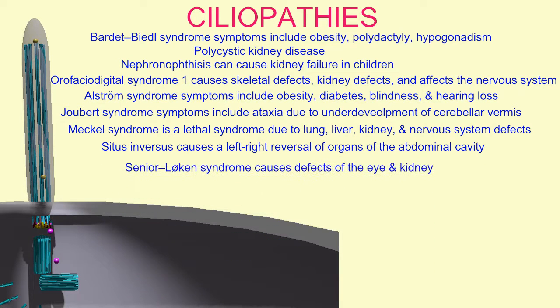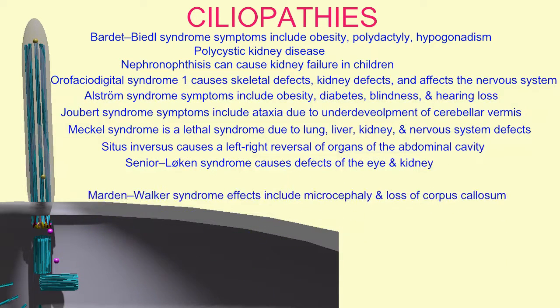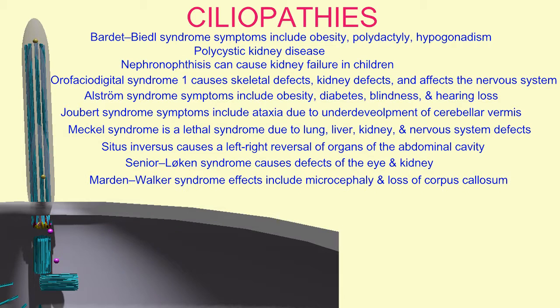Ciliopathies can affect the kidney, the nervous system, the skeletal system, the liver, the lungs, and even cause the left-right reversal of abdominal organs.